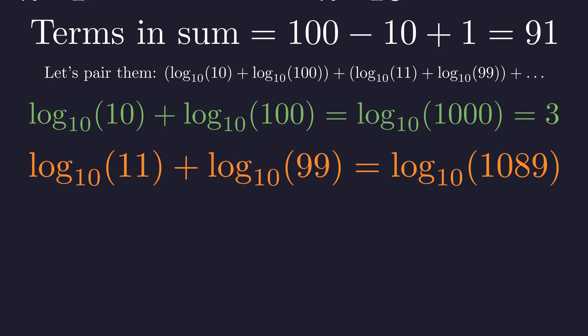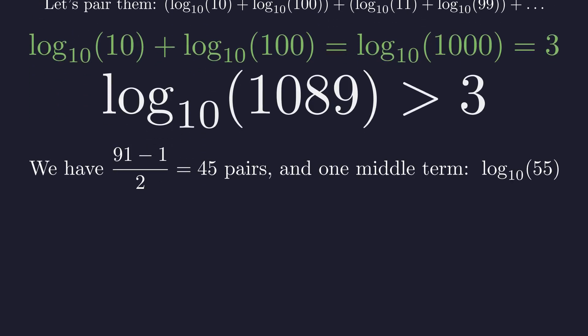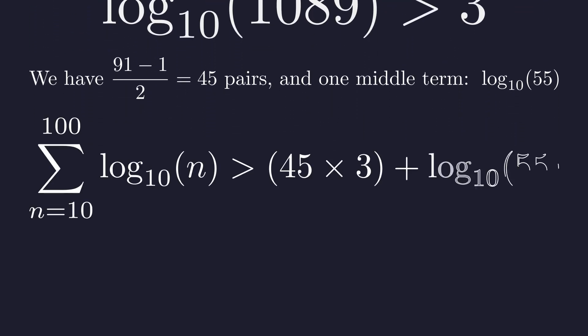Now check out the next pair: 11 and 99. Their product is 1089. Since 1089 is bigger than 1000, its logarithm has to be bigger too. So this pair gives us more than 3. And here's the beautiful part: every single pair we form has this same property. They all give us more than 3. So we've got 45 pairs, each one contributing more than 3, plus that middle term, which is log of 55. That means our sum has to be bigger than 45 times 3, plus log of 55.